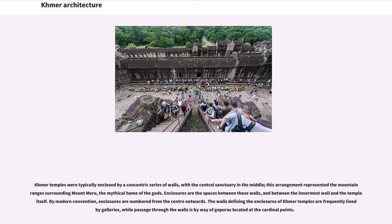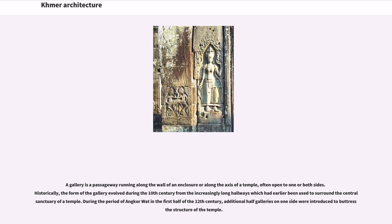Khmer temples were typically enclosed by a concentric series of walls with a central sanctuary in the middle, representing the mountain ranges surrounding Mount Meru. Enclosures are the spaces between these walls and between the innermost wall and the temple itself; by modern convention, enclosures are numbered from the center outwards. The walls defining enclosures frequently lined galleries, while passage through the walls is by gopuras located at the cardinal points. A gallery is a passageway running along the wall of an enclosure, often open to one or both sides. The form of the gallery evolved during the 10th century from increasingly long hallways. During the period of Angkor Wat in the first half of the 12th century, additional half-galleries were introduced to buttress the structure.